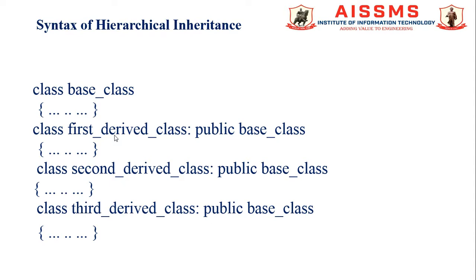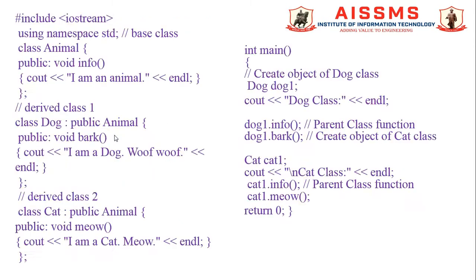This is the general syntax of hierarchical inheritance. We use this syntax for developing the program source code. Class first, class second, class third are derived from the base class. Base class is our parent class or superclass.